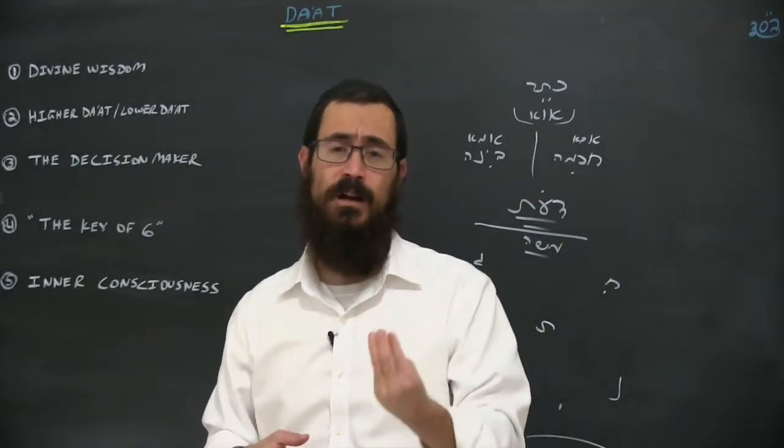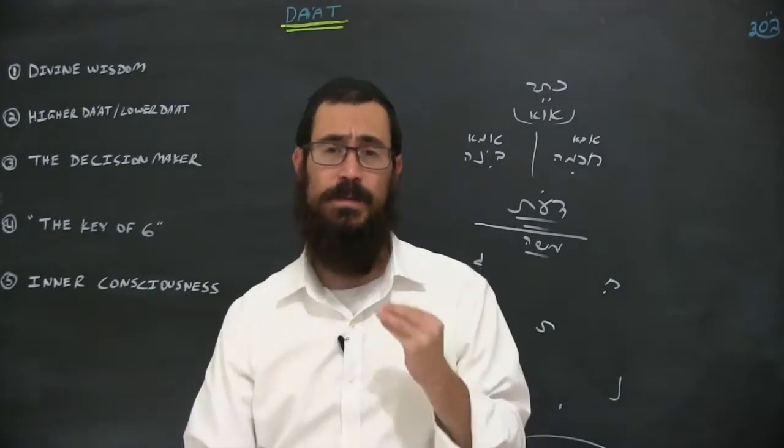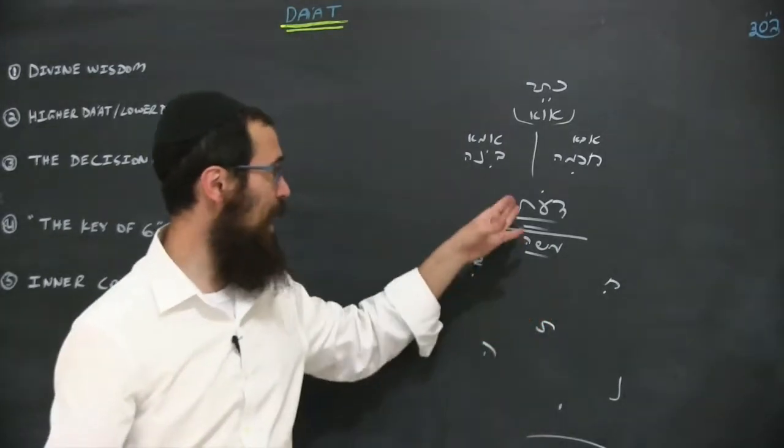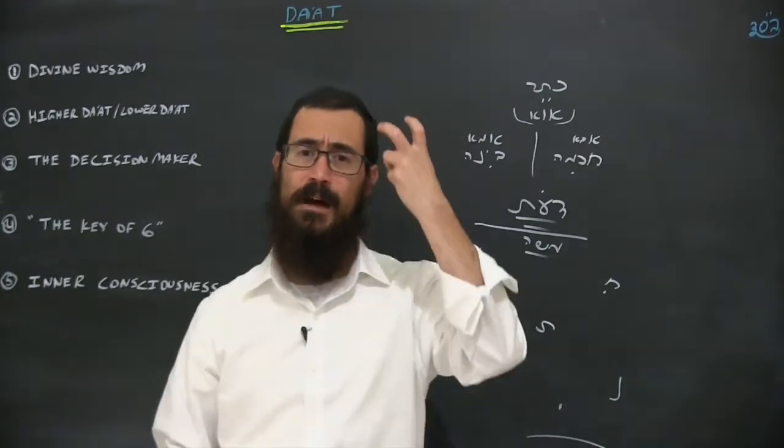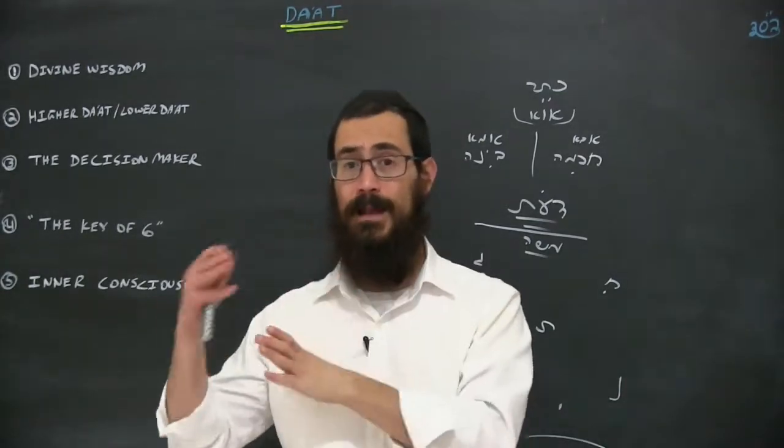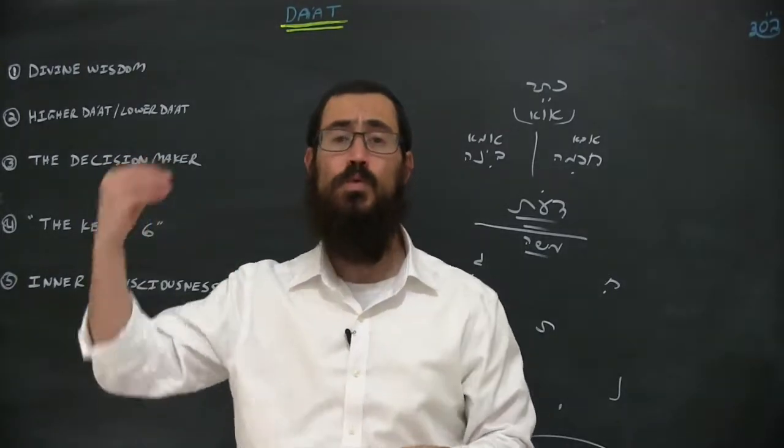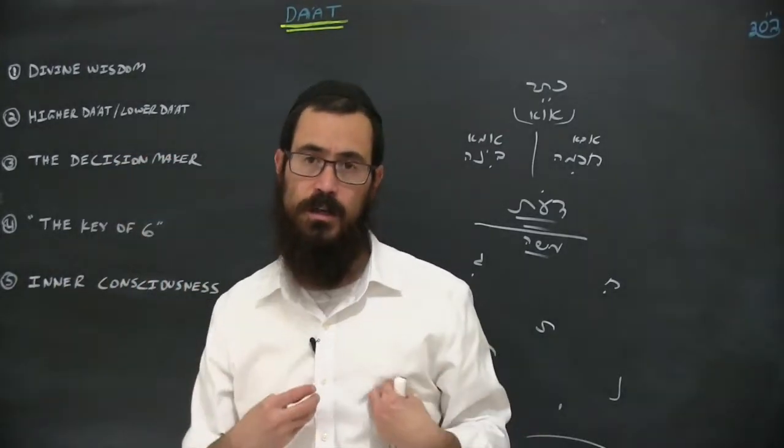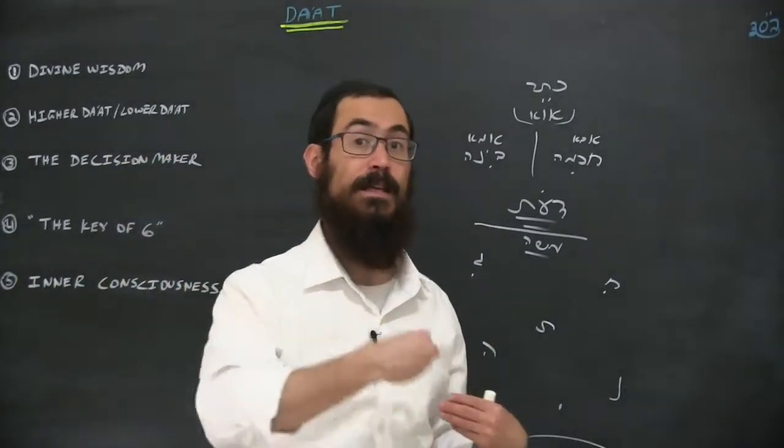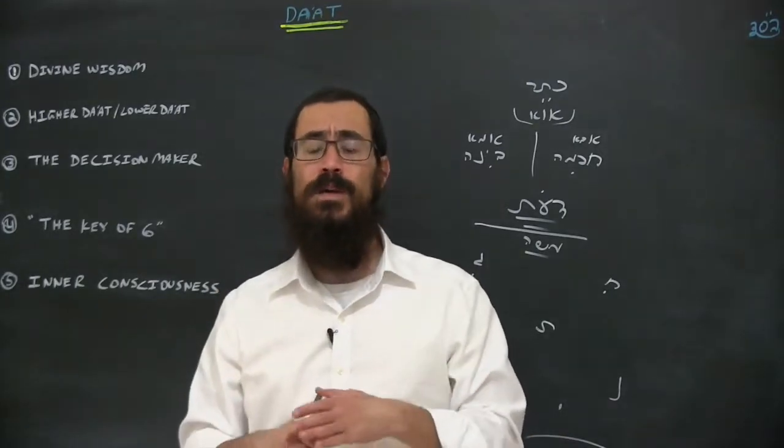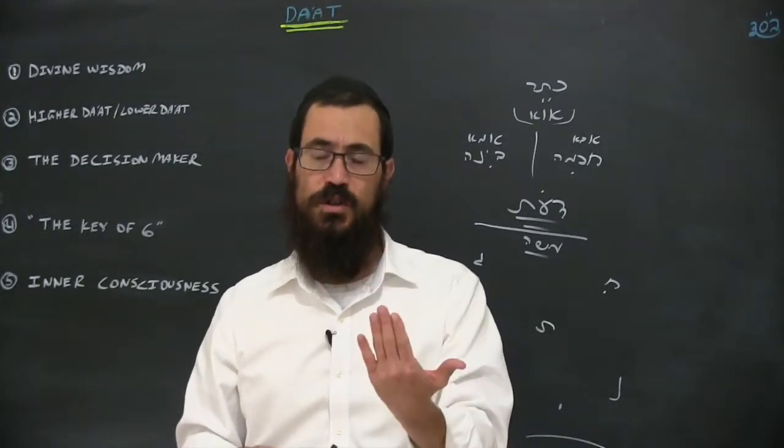Here's where the Zohar, the great wisdom of the Zohar, is so amazing. The Zohar tells us that dat is the key of six, meaning that via dat, and the way that Tanya puts it, moach shalit al ha-lev, the mind rules over the heart.